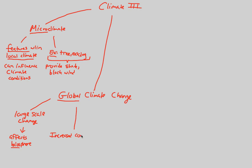This large-scale change is mainly due to an increased concentration of two main things: CO2 (carbon dioxide) and other greenhouse gases. These are naturally occurring gases, but if there is too much — an increased concentration, more than normal — of these greenhouse gases and CO2, then we usually have problems in terms of the climate change we observe.